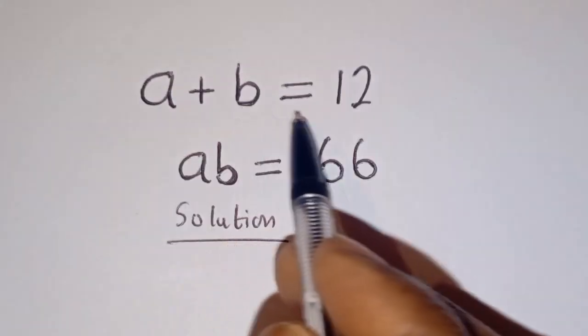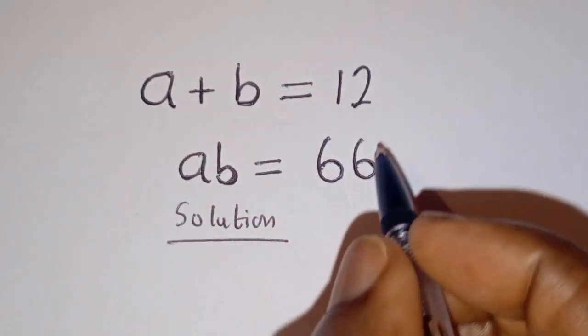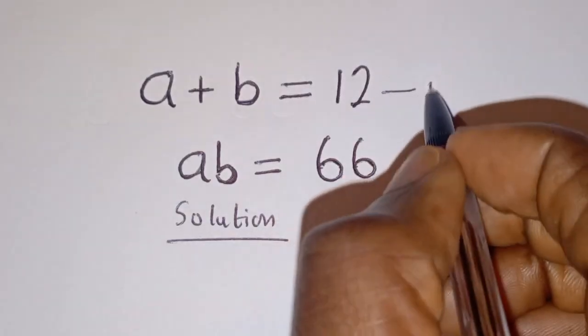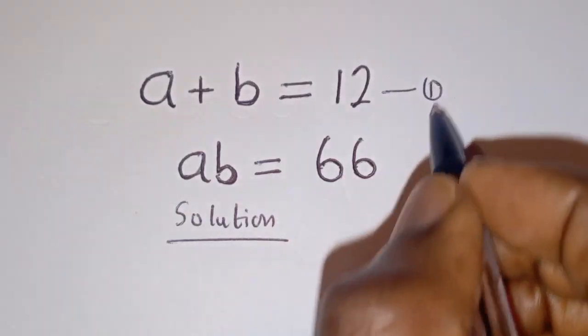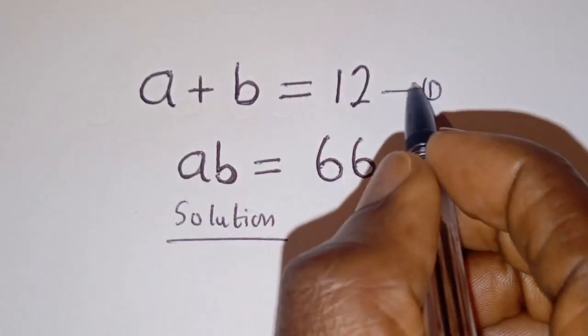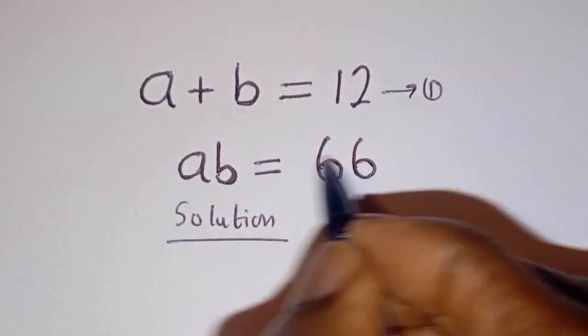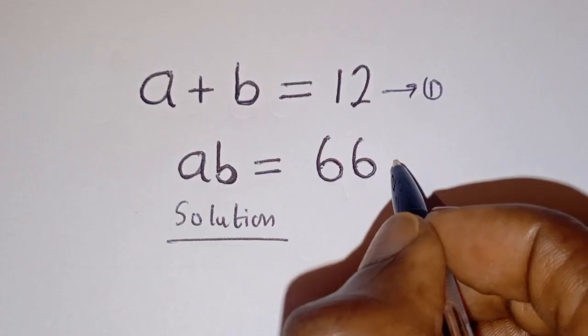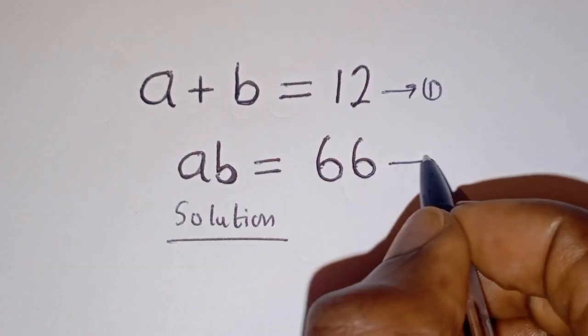Then A plus B is equal to 12 — let's call this equation 1. A times B is equal to 66 — let's call this equation 2.